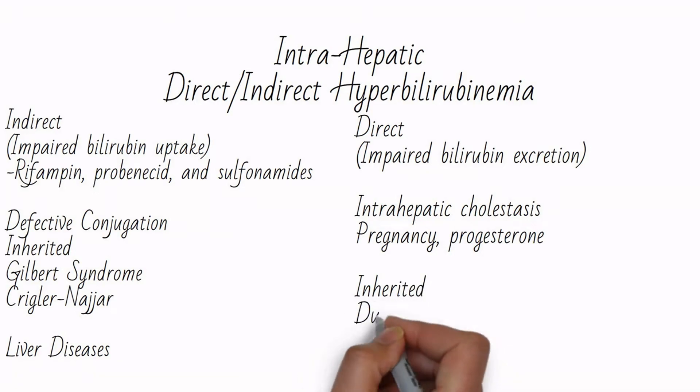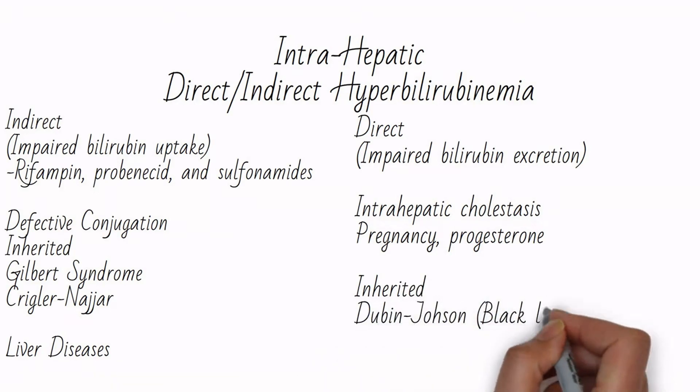Inherited defects in bilirubin excretion include Dubin-Johnson syndrome, which will have a black liver on MRI, and Rotor syndrome.